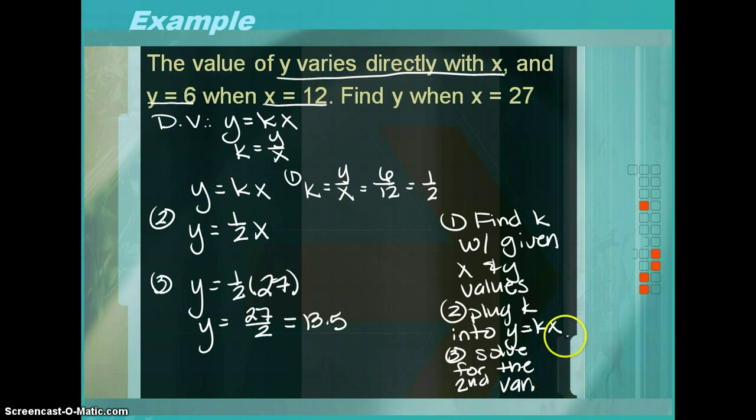Now, please understand that it may give you y and ask for x. It just depends. But, as long as you have step 2 done correctly, you can always determine any y or any x from there as long as you're given the other variable.